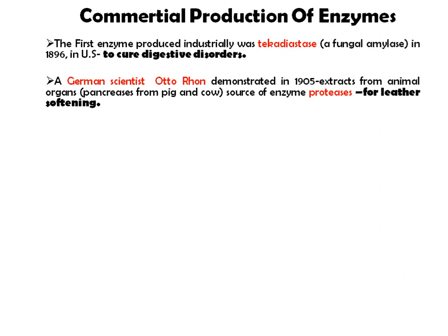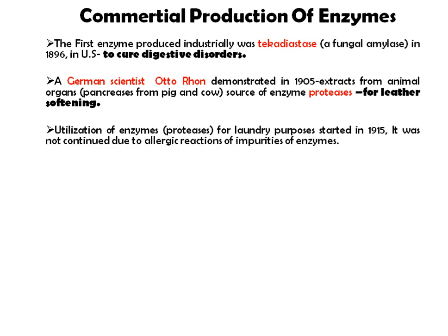A German scientist, Otto Röhm, demonstrated in 1905 that extracts from animal organs — specifically the pancreas from pig and cow — were a source of the enzyme protease, used for leather softening. This was the second major invention in enzyme biotechnology: isolation of protease from pig and cow pancreas for use in leather softening.